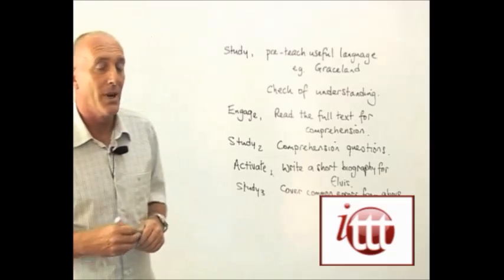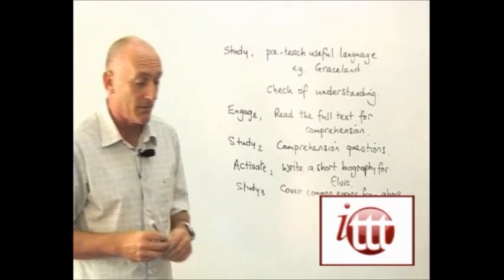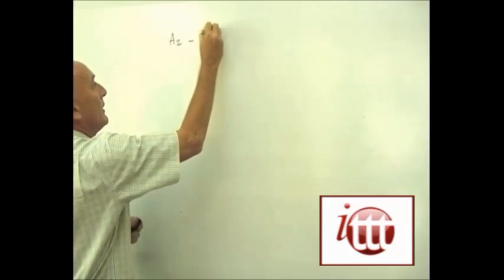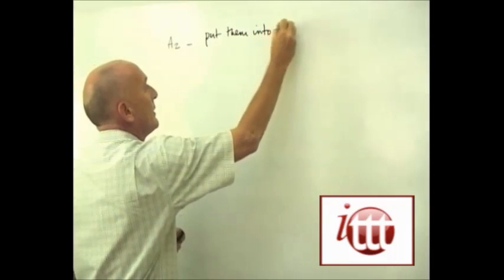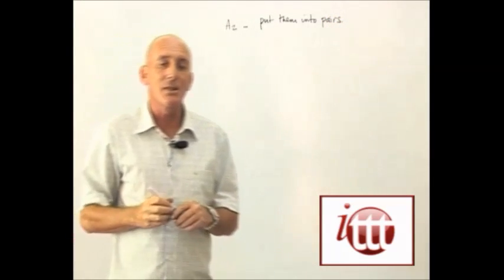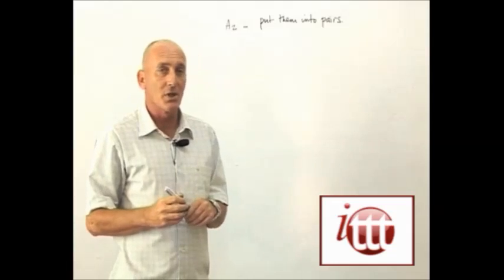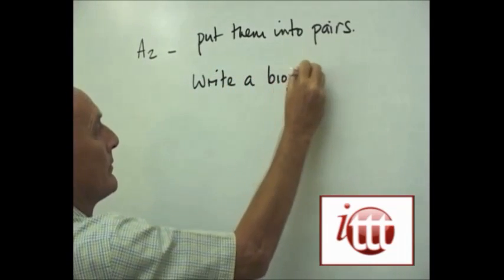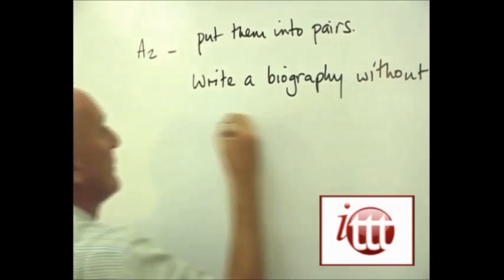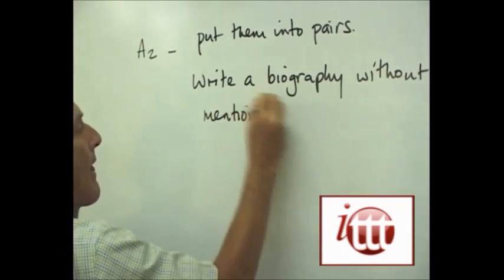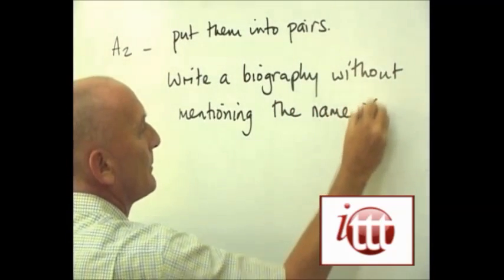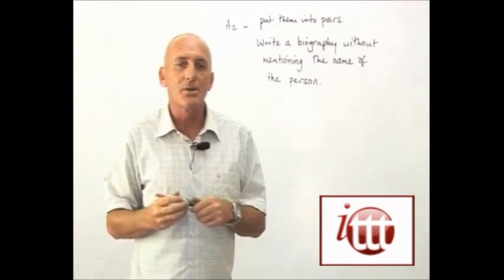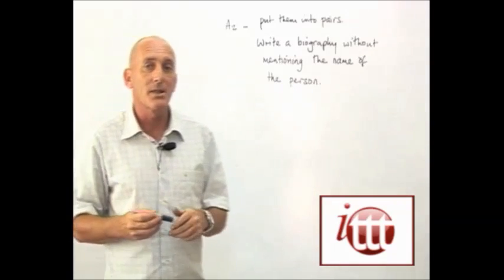Once we've done that, we can go on to the final phase of the lesson, which will be our second activate activity. For that final activity, we're going to put the students into pairs and we're going to ask them to write an autobiography which doesn't contain the name of the person they're writing about. What we can then do is to get them to read out their biographies and we can ask the class to guess who it is.